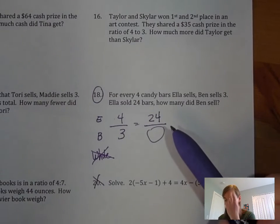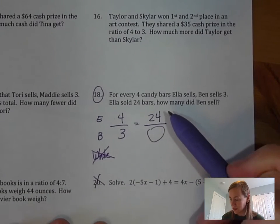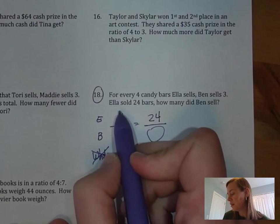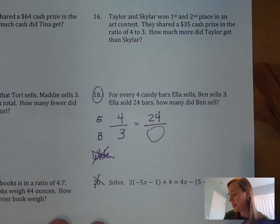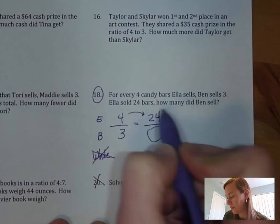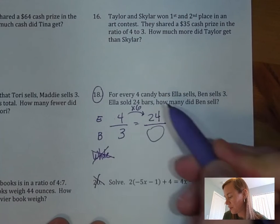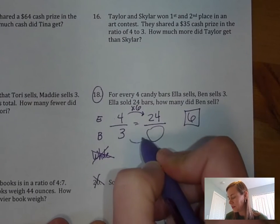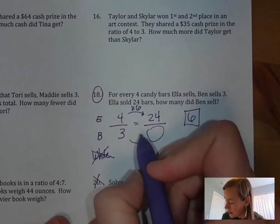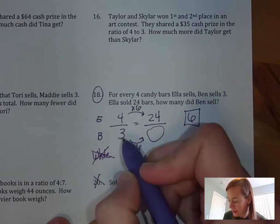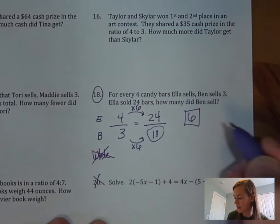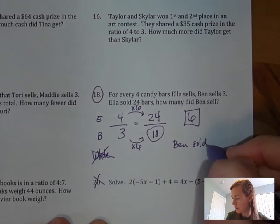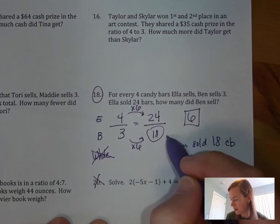At this point we have two choices. We could continue to use scale factor. Using scale factor, how do you turn a 4 into a 24? What are you going to multiply or divide by? It looks like we can multiply by 6. The scale factor is going to be a 6. Over here on the denominator side of things we're going to also multiply by 6, and 3 times 6 is going to be 18. So it looks like Ben sold 18 candy bars.